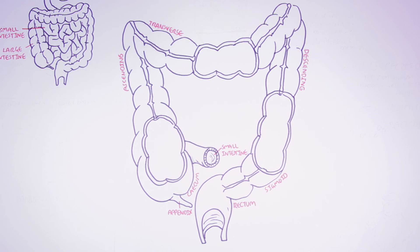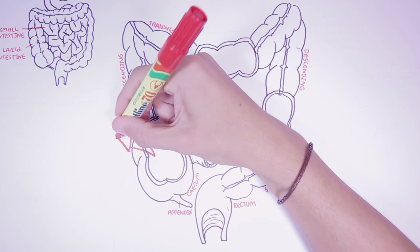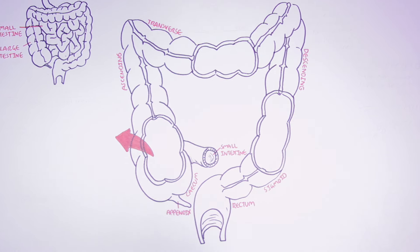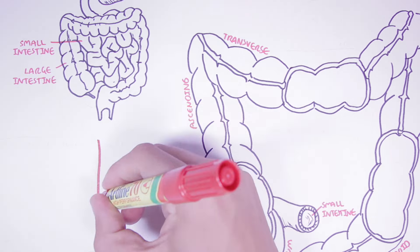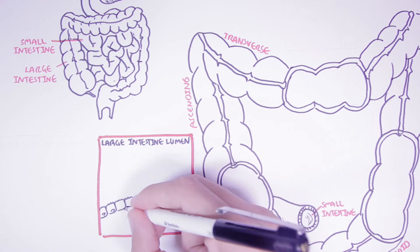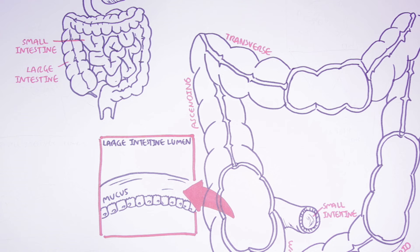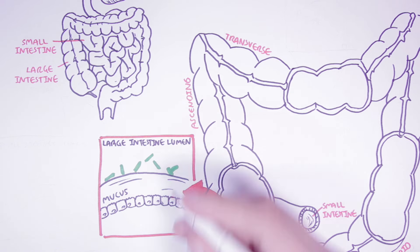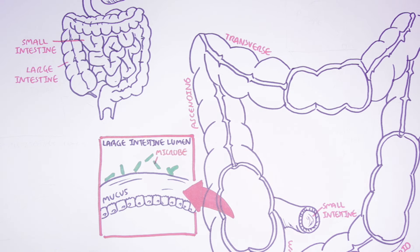You might be thinking: if bacteria are inside our body, wouldn't it initiate some form of immune response? Well, that is true, but the digestive tract, as well as other tracts, are special in that they contain mucus. So if we zoom into the large intestine here, we have the lumen of the large intestine, and here are the colon cells. Above the colon cells, we have mucus, which acts as a barrier between the microbial community within the lumen and the human cells.